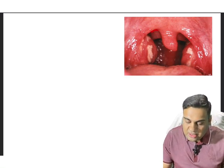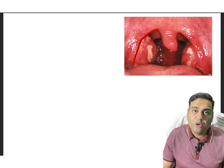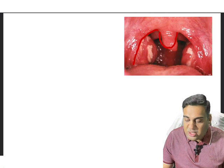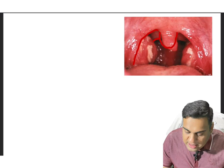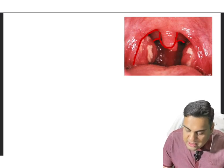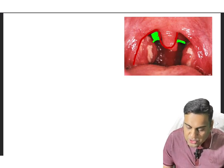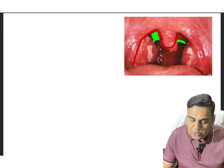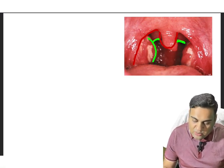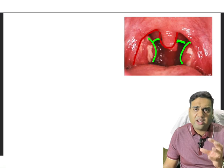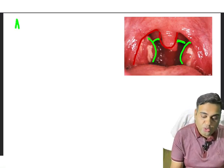This is the anterior pillar, formed by the palatoglossus. This is the uvula — the uvulae muscle. Behind this you can see the posterior pillar. And here you can see the tonsils which are enlarged, red, congested, and showing pus. This is a case of acute tonsillitis.